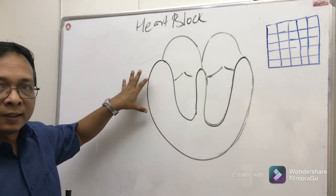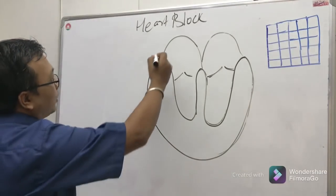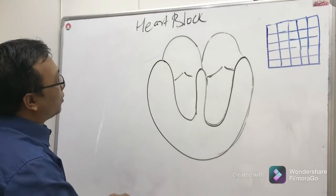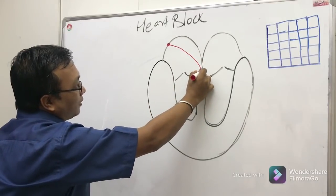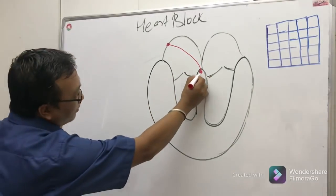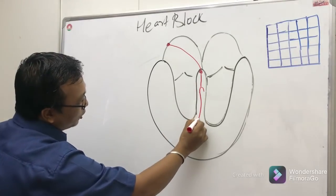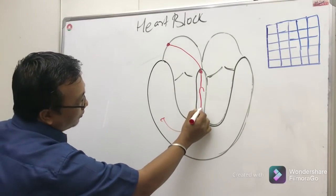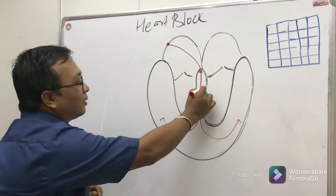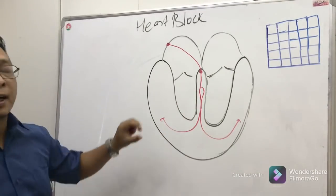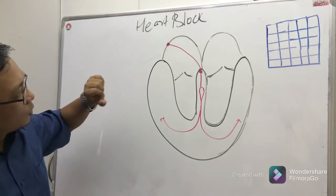To diagnose heart block on ECG, you first need to understand normal cardiac conduction. The impulse comes through the SA node, travels to the AV node, then to the bundle of His, which divides into the right bundle branch, Purkinje fibers, and left bundle branch. That is the normal cardiac conduction pathway.